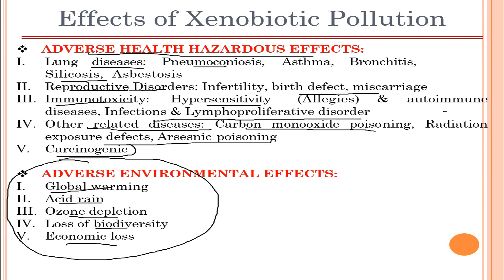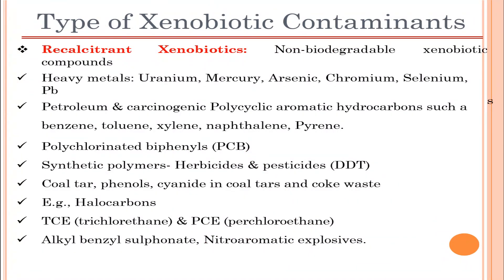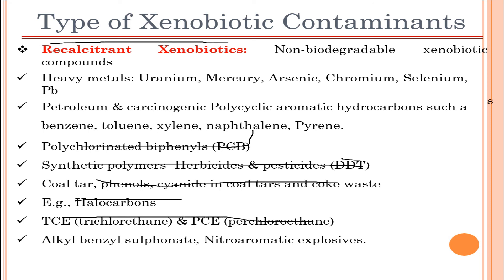Recalcitrant xenobiotics are non-biodegradable xenobiotic compounds. These include heavy metals such as uranium, mercury, arsenic, chromium, selenium, and lead; petroleum and carcinogenic polycyclic aromatic hydrocarbons such as benzene, toluene, xylene, naphthalene, and pyrene; polychlorinated biphenyls (PCBs); synthetic polymers; herbicides and pesticides such as DDT; coal tars; phenols; cyanide; and halocarbons such as TCE (trichloroethylene) and PCE (perchloroethylene).